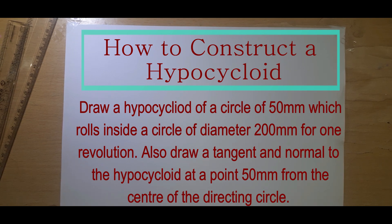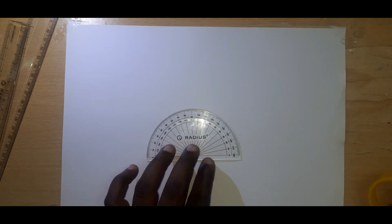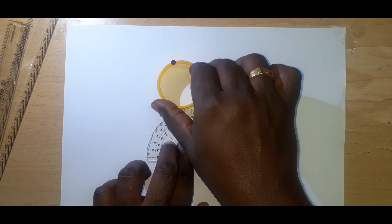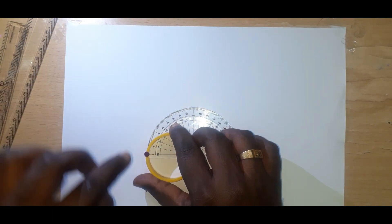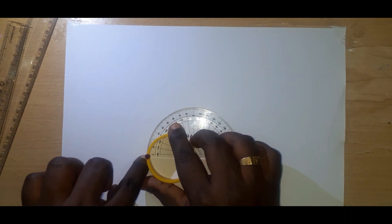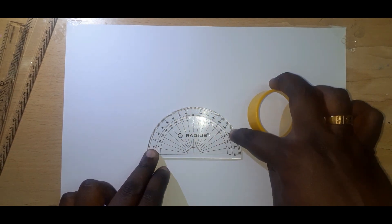First we should be very clear about how the hypocycloid will rotate. In the epicycloid, the rolling circle rotates on the outside in a clockwise direction. For a hypocycloid, the rolling circle rolls inside the directing circle. The directing point touches the base and rotates in this order, and the profile will come out in this way.